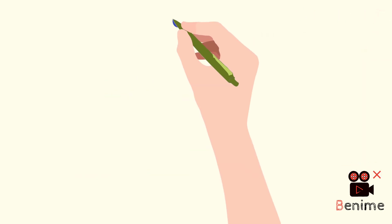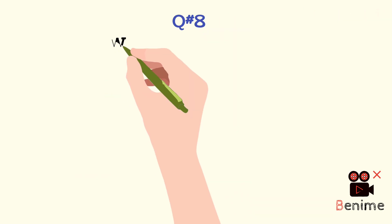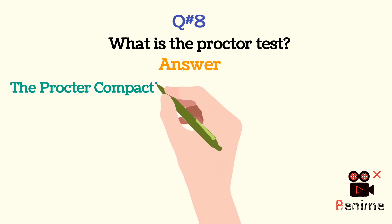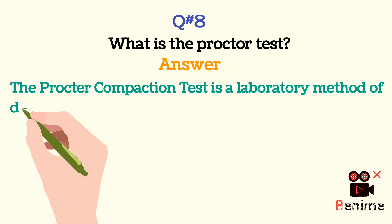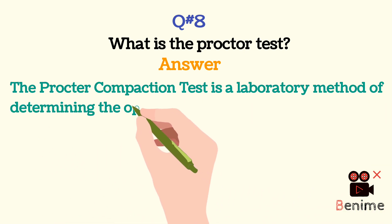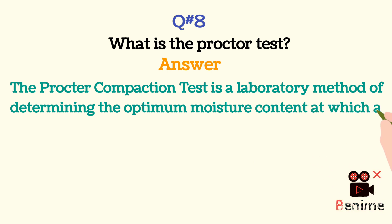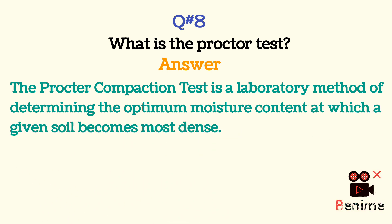Question 8: What is the Proctor test? The Proctor compaction test is a laboratory method of determining the optimum moisture content at which a given soil becomes most dense.